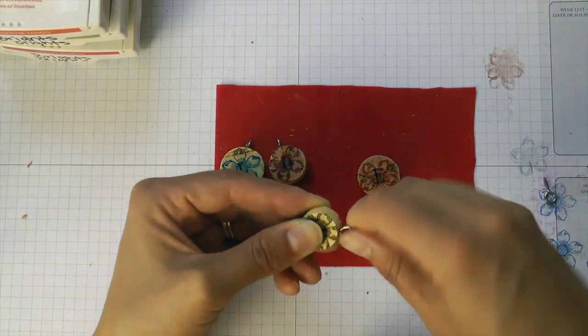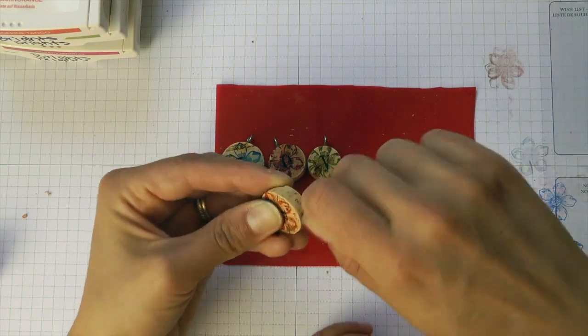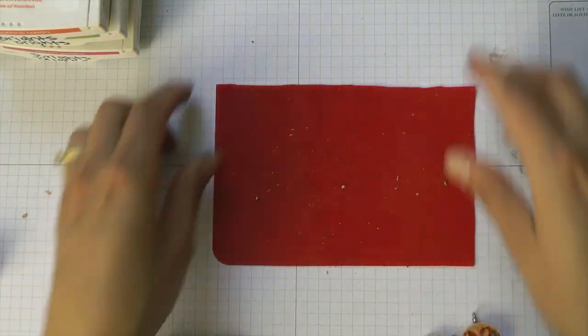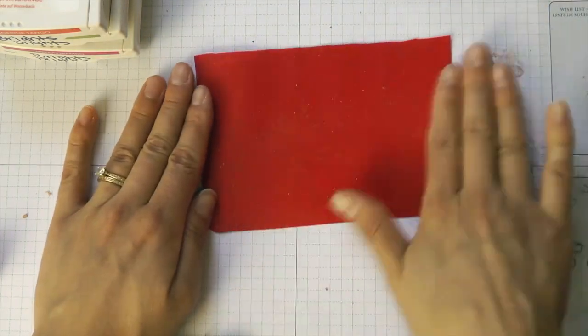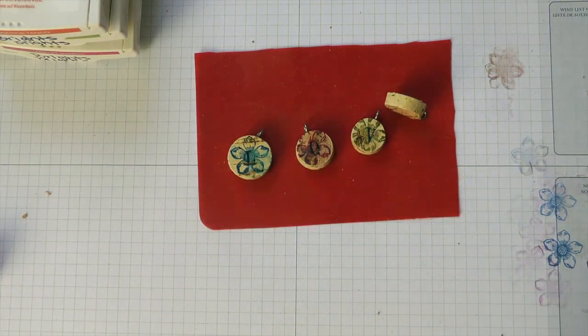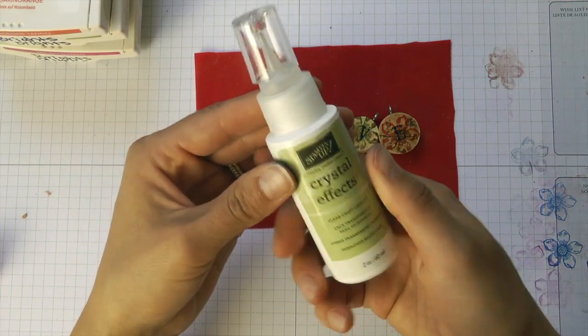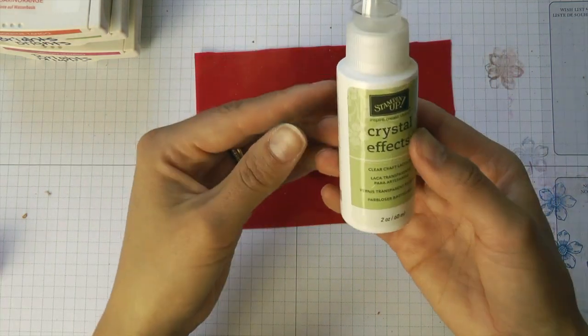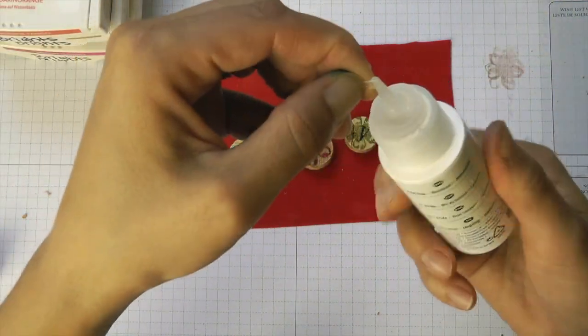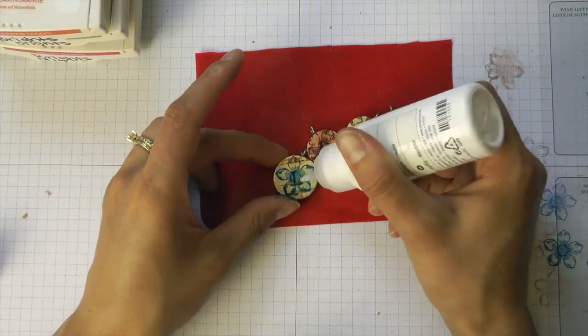L-O-V-E. Next, this is where our silicone mat comes in handy because baby's hands away, you don't want them touching it. We're going to use crystal effects. I love, love, love this stuff. This is what Stampin' Up carries. I happen to love this one. I'm just going to peel this off and we are going to really coat this.